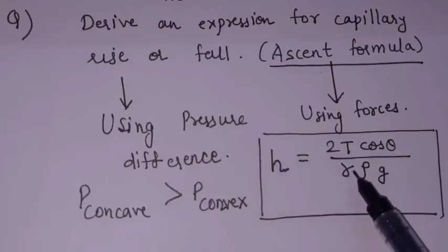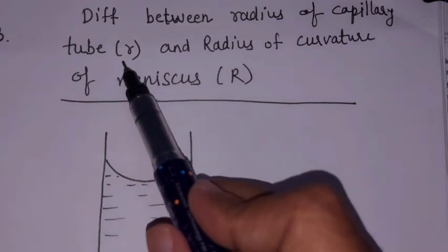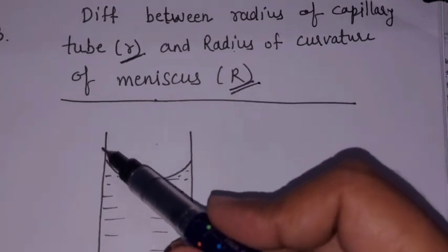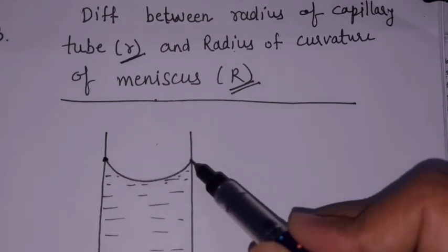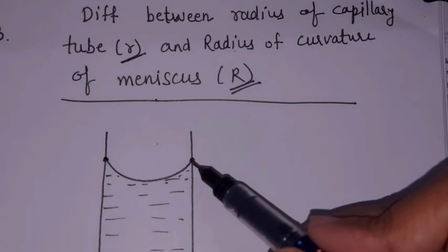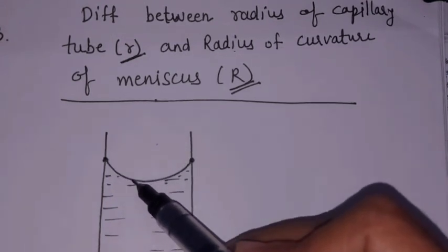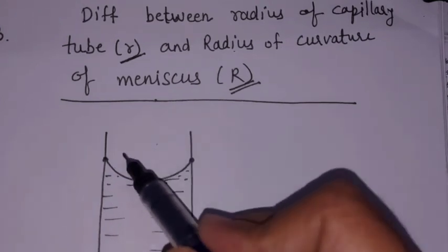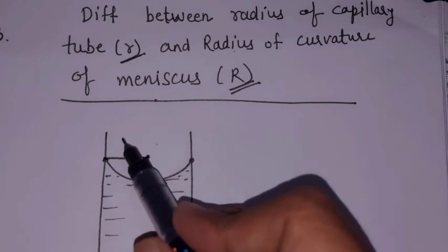Before the derivations, we understand two terms: radius of capillary tube, denoted by small r, and radius of curvature of meniscus, denoted by capital R. The radius of capillary tube is the distance from the point of contact on the wall to the center of the capillary tube — that is, half the internal diameter.